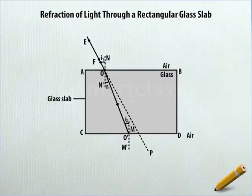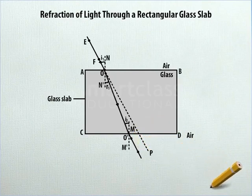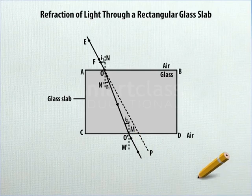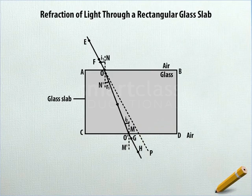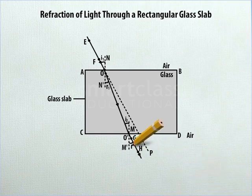From O', draw a slanting line parallel to OP. Put two dots on this line and label them as G and H, both in uppercase. Below the point H on this line, draw an arrowhead pointing downwards. Between the line segments O'H and O'M', draw an arc to indicate the angle of refraction at the second surface and label it as R2.